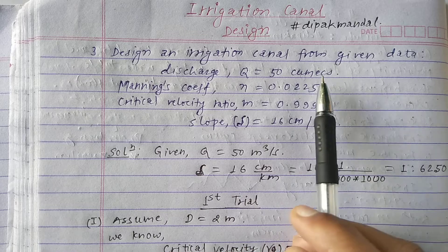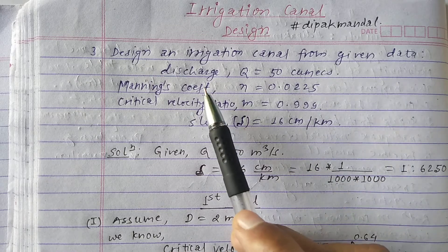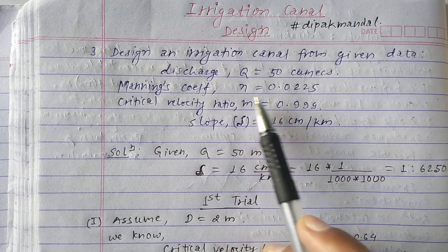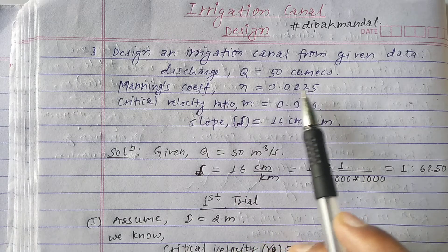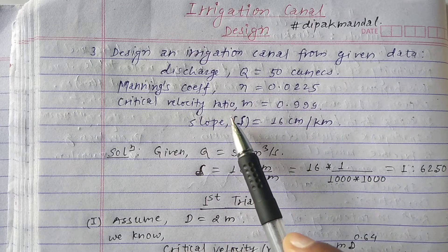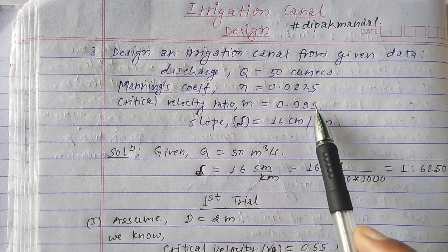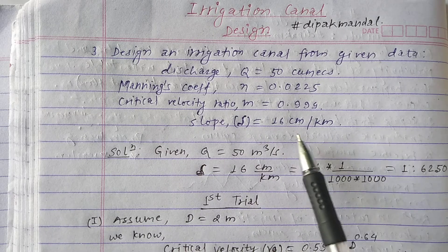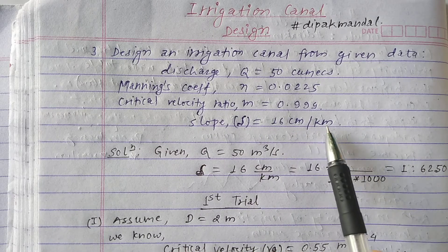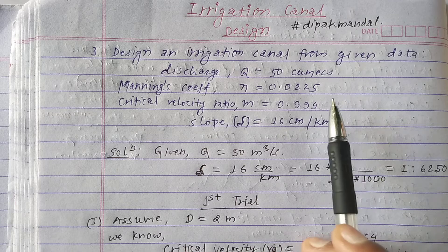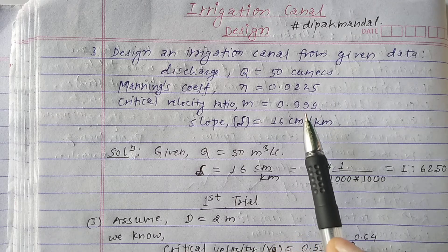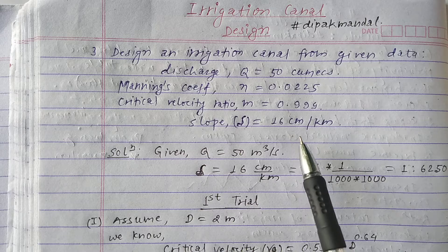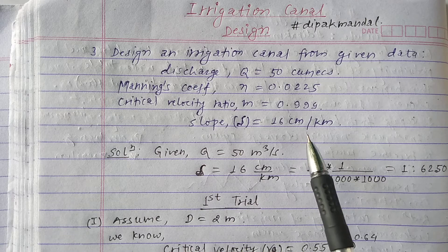Design an irrigation canal from the given data. We are given: discharge Q = 50 m³/s, Manning's coefficient η = 0.025, critical velocity ratio m = 0.99, and slope S = 16 cm per kilometer. This is the given data, and we have to design the irrigation channel using this data.